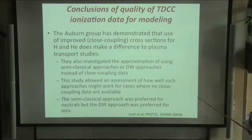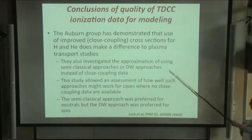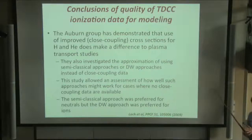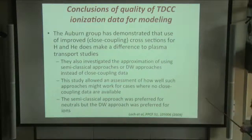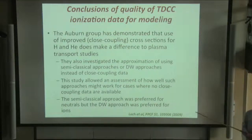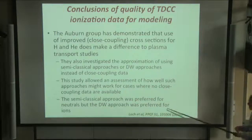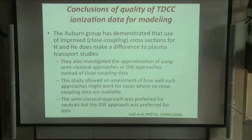In terms of conclusions about ionization data computed over the last decade: Stuart and Connor did a study looking at how improved close coupling calculations make a difference in plasma transport. They compared generalized rate coefficients using the best possible data for hydrogen and helium versus distorted wave or semi-classical approaches in plasma transport codes, finding that the distorted wave approach was closer to the close coupling answer for ions, but a semi-classical approach was actually preferred for neutral systems.